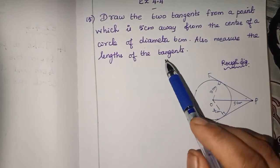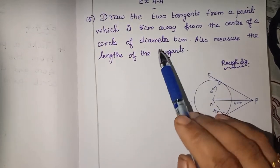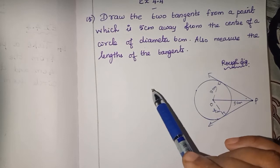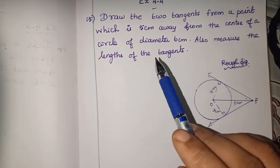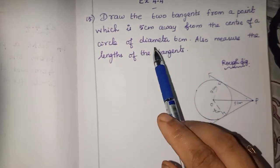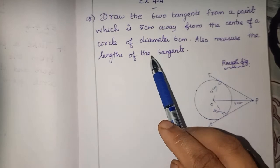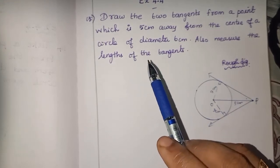Some students will make a mistake by taking the diameter as the radius. Please don't do that — you will lose marks. Read the question carefully. That is very very important.